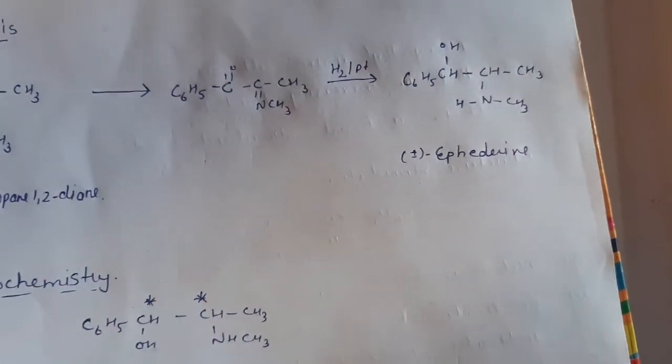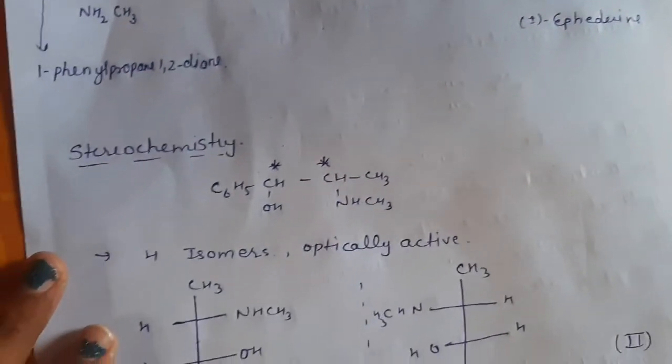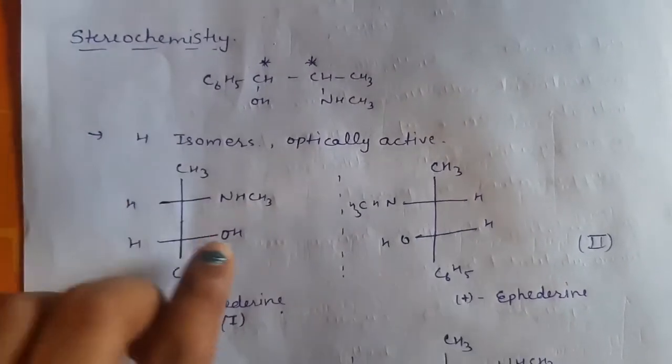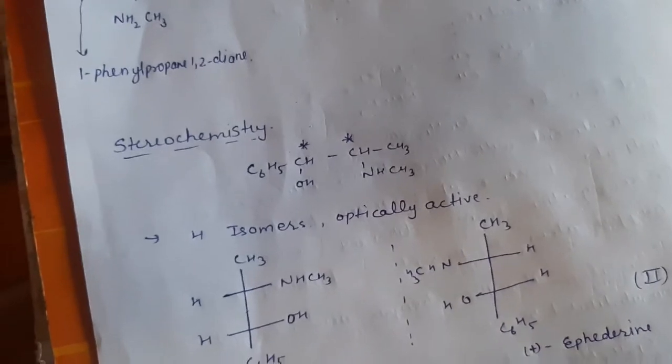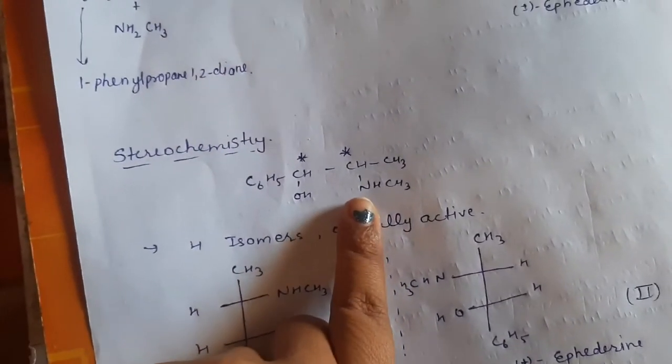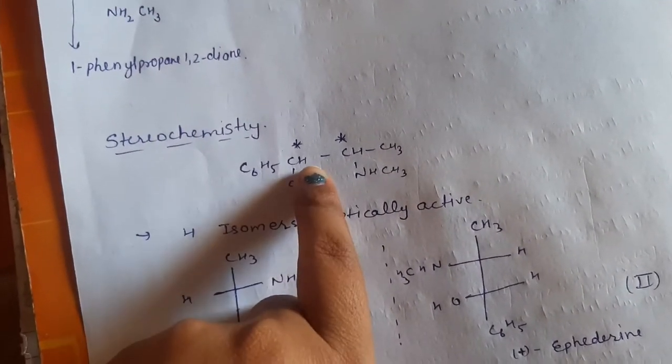Now next topic is stereochemistry of ephedrine. Here we will get there are two stereocenters in ephedrine, this is the first stereocenter that has four different valences and here is the second stereocenter where four valences are different.